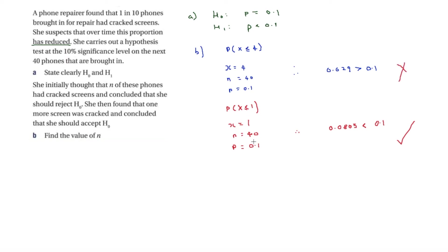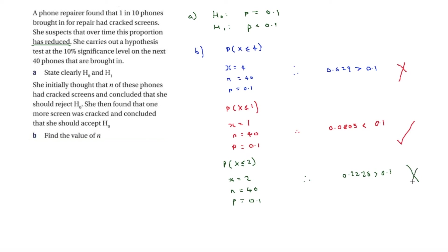We need to check P(X ≤ 2). If that is over 0.1, then x ≤ 1 is our critical value. Using x = 2, n = 40, p = 0.1, we get 0.2228, which is evidently more than 0.1. So we cross that one — the critical value is x ≤ 1.